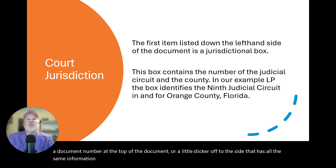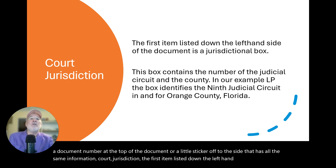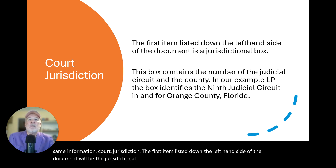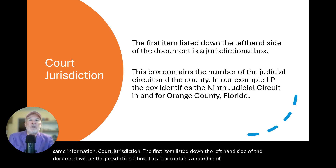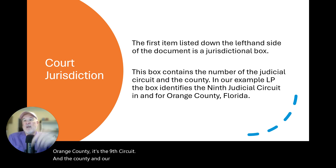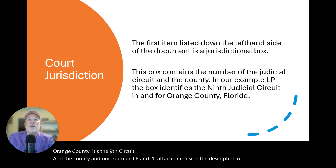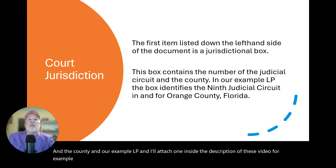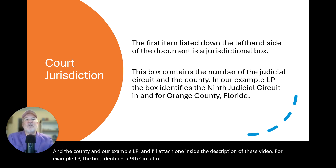Court jurisdiction. The first item listed down the left-hand side of the document will be the jurisdictional box. This box contains the number of the judicial circuit — in Orange County it's the Ninth Circuit — and the county. In our example LP, which I'll attach inside the description of this video, the box identifies the Ninth Circuit of Orange County. So that gives us our jurisdiction.